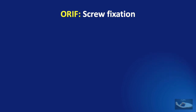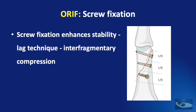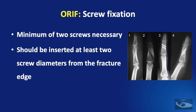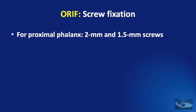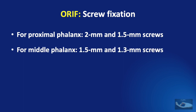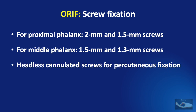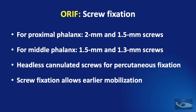Lag screws can be used for fixation of phalangeal fractures, ideally for oblique fractures — either short oblique, long oblique, or spiral fractures. The use of screws enhances stability by the lag technique through inter-fragmentary compression. A minimum of 2 screws are necessary for oblique fractures, inserted at least 2 screw diameters from the fracture edge. For proximal phalanx fractures, 2mm and 1.5mm screws are used; for middle phalanx fractures, 1.5mm and 1.3mm screws can be used. For transverse fractures, headless cannulated screws can be used by percutaneous fixation technique. The obvious advantage is that early mobilization can be started, avoiding adhesions and joint stiffness.